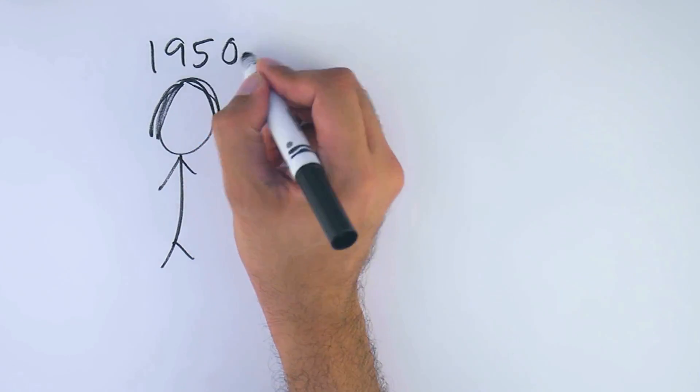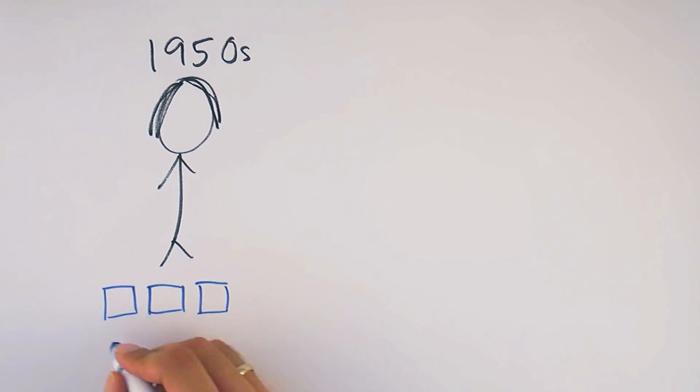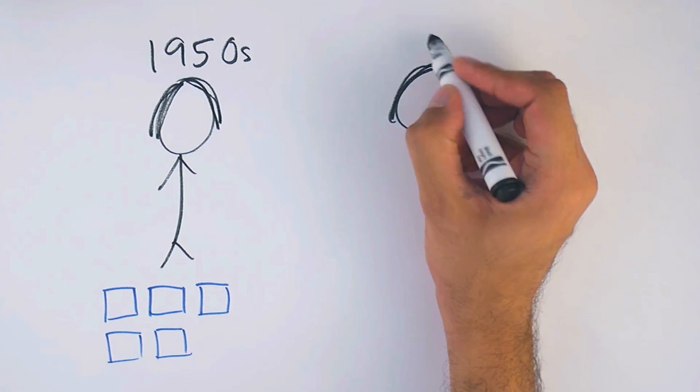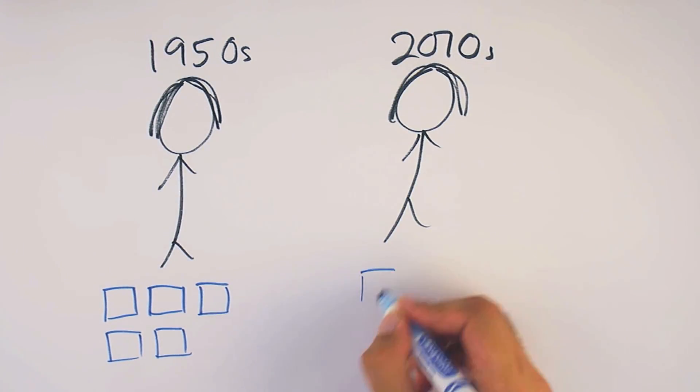In the 1950s, on average, a woman would give birth to five children in her lifetime. Today the number is half that. Globally every woman gives birth to an average of 2.5 children.